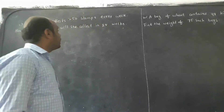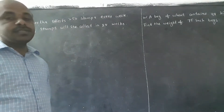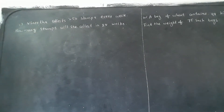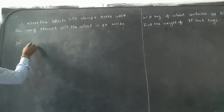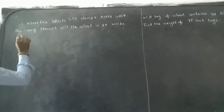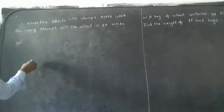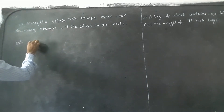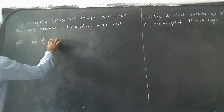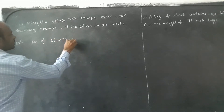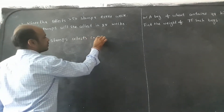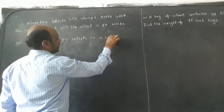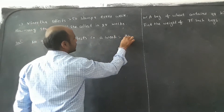By the same way, she collects 250 stamps in a week. Total — how many are there in 28 weeks? So the first statement we write: Vinita collects stamps every week. Week means 7 days. Number of stamps collected in a week is 250 stamps.